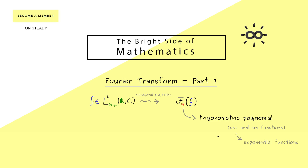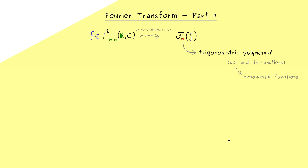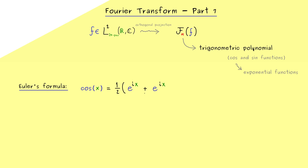In this video we will explain how we can go to the exponential functions and how the formulas look. The essential ingredient here is just Euler's formula, which tells us that the cosine of x can be written as one half times e to the power ix plus e to the power minus ix.